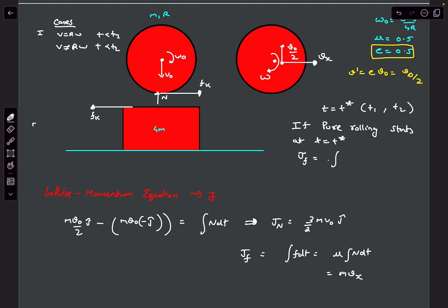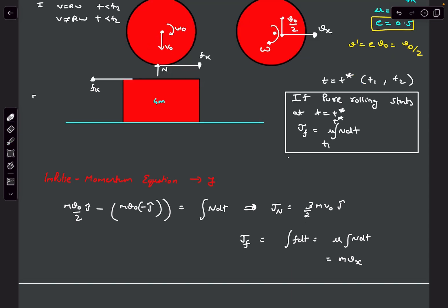If pure rolling starts at t_star, the impulse due to friction is integral of mu·N dt only from T1 to t_star, not all the way to T2. After t_star the sphere rolls without slipping, so friction is no longer needed and effectively leaves the scene. This is the mistake many people make.